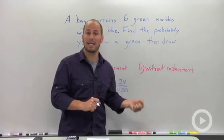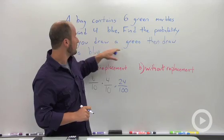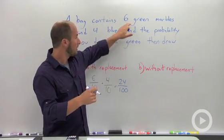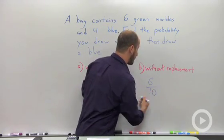Without replacement. So now I am taking a marble and I'm not putting it back in. So we still need to grab that green first. There's still 10 marbles. We're grabbing one. There's six greens. So the probability is still six-tenths that we grab that green.